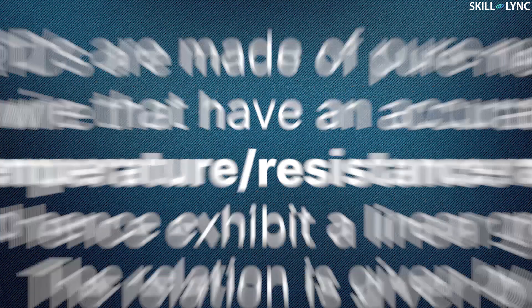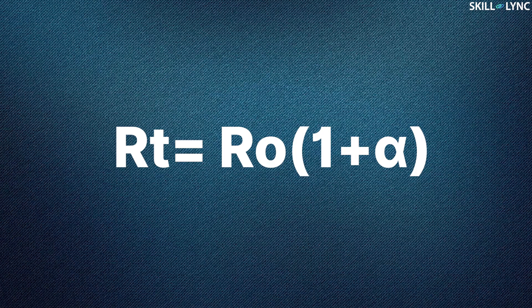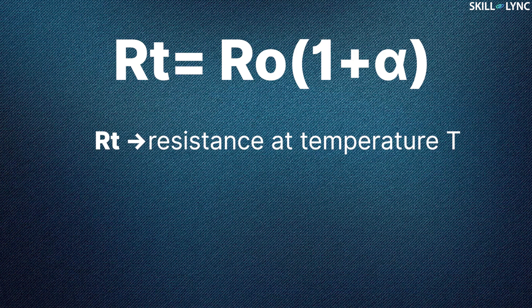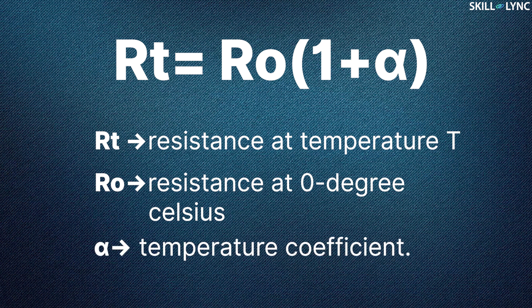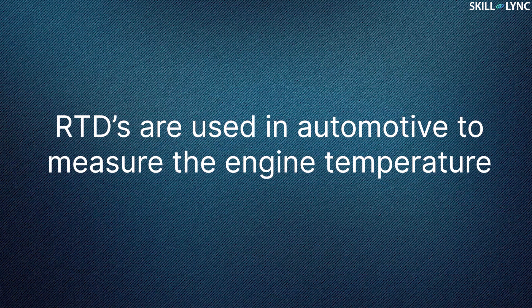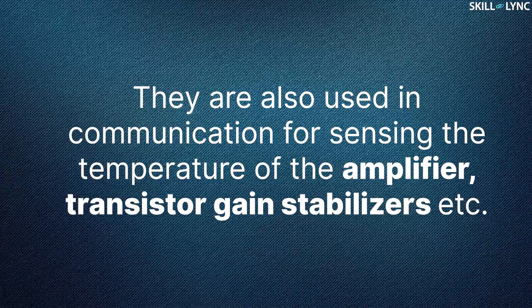The relation is given by RT equals R0 multiplied by 1 plus alpha, where RT is the resistance at temperature T, R0 is the resistance at 0 degrees Celsius, and alpha is the metal constant termed as temperature coefficient. RTDs are used in automotives to measure the engine temperature. They are also used in communication devices for sensing the temperature of the amplifier, transistor gain stabilizers, etc.